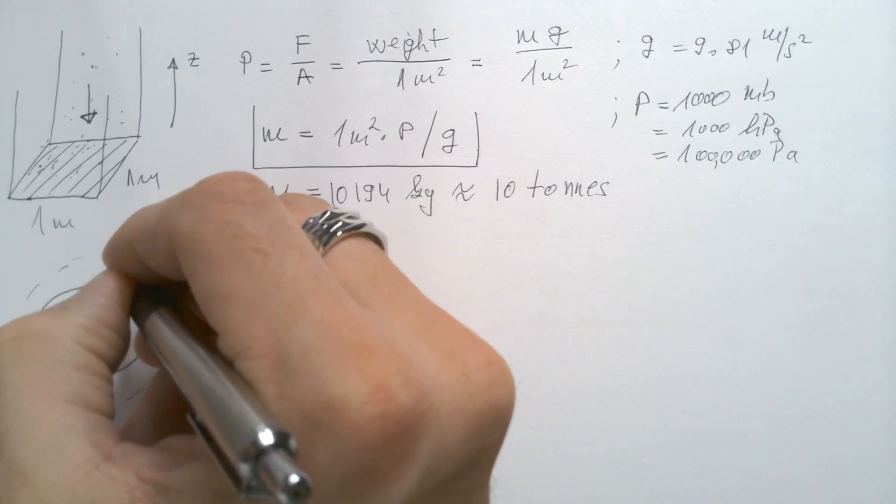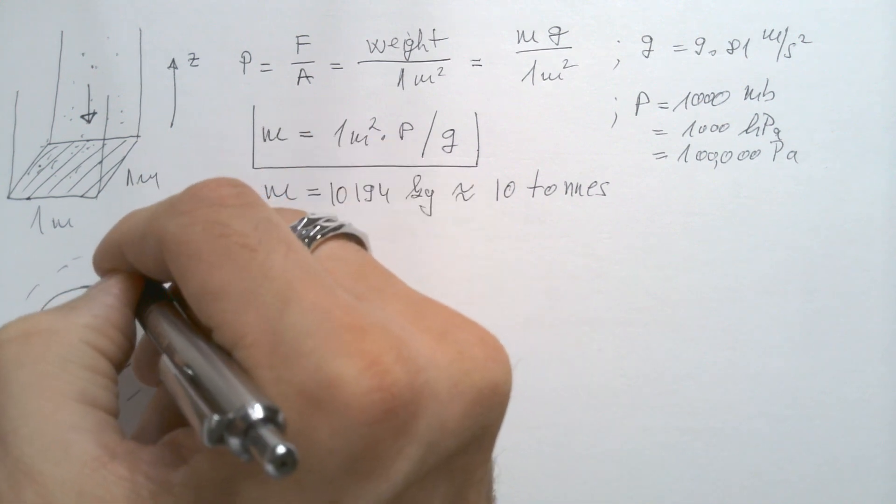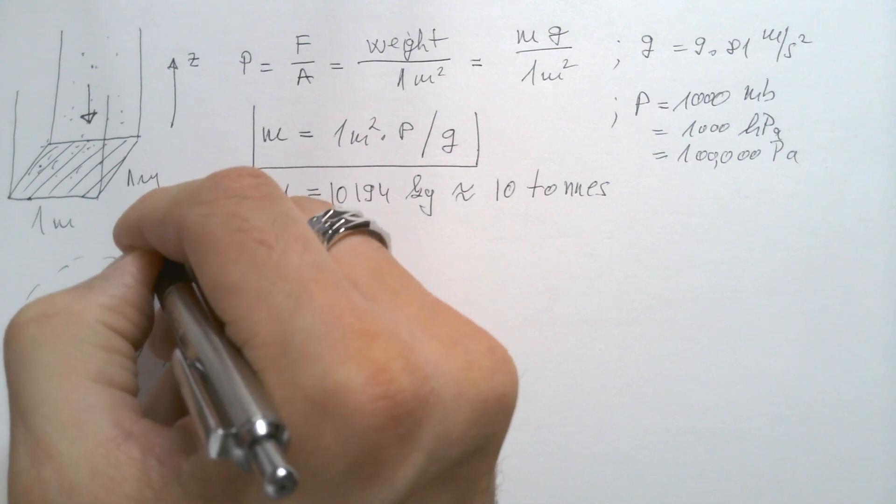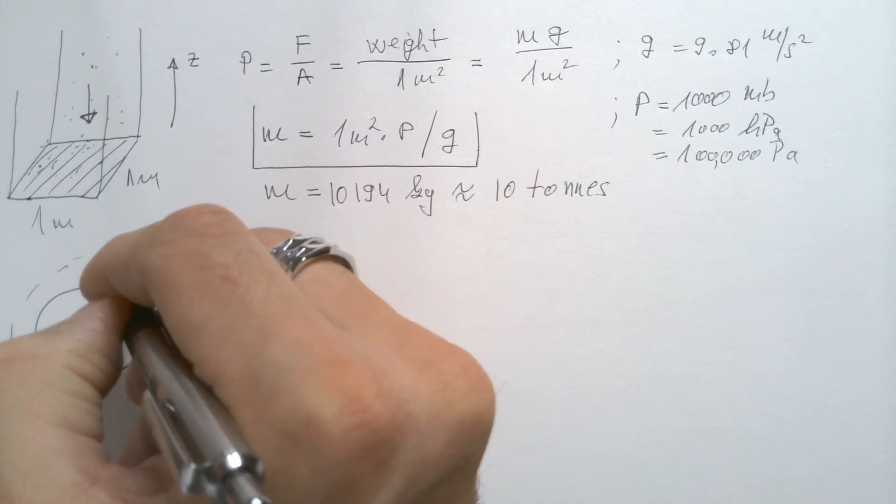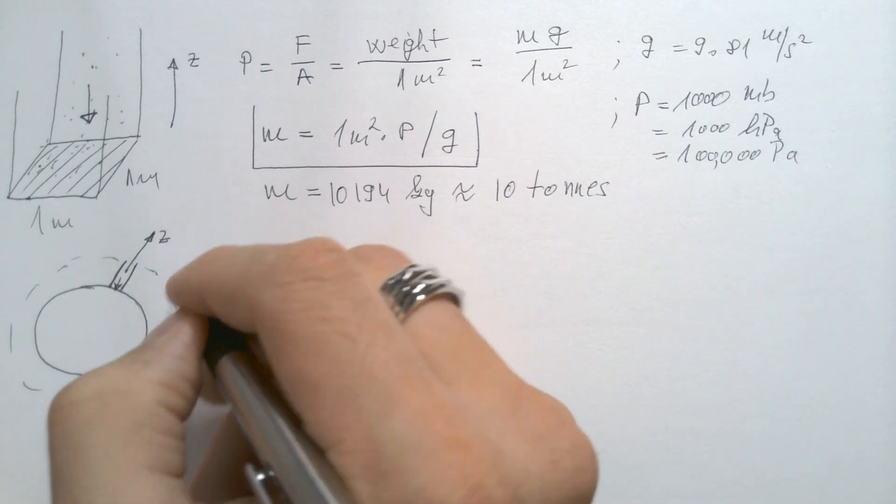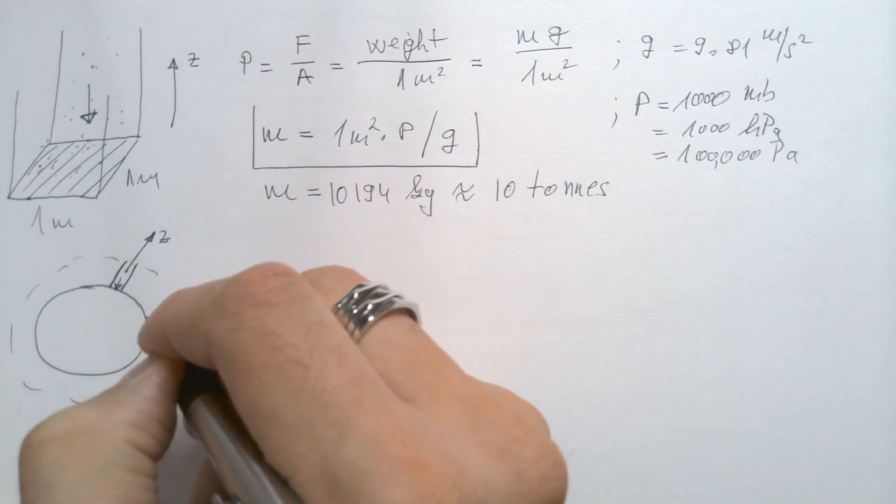That column that I analyzed was over here. Which means Z axis was going up. Weight was acting down. If I take another column over here,